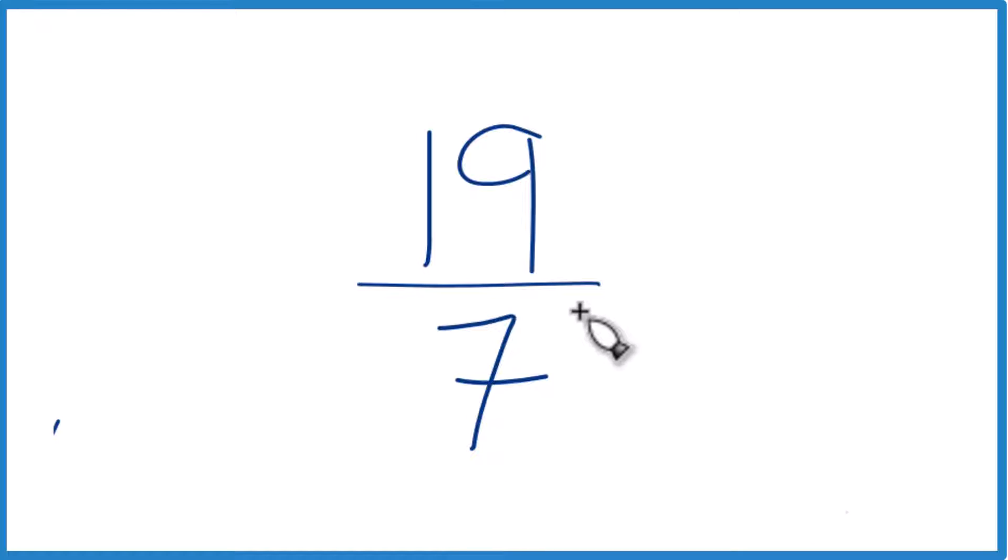The way we do that is we see how many times 7 goes into 19. So 2 times 7 is 14. 3 times 7 is 21. That's too much. So let's go with 2 times 7.